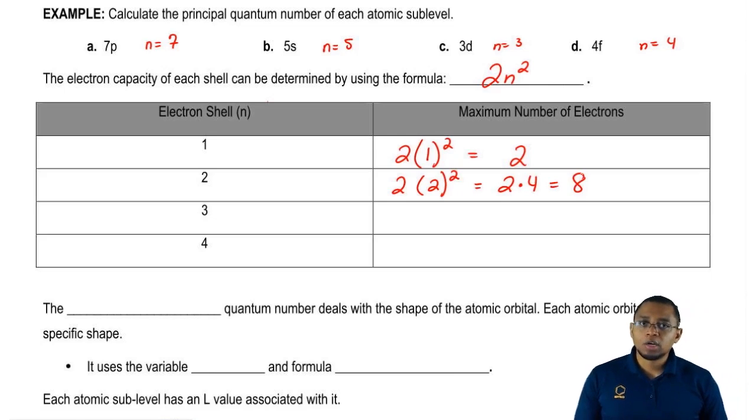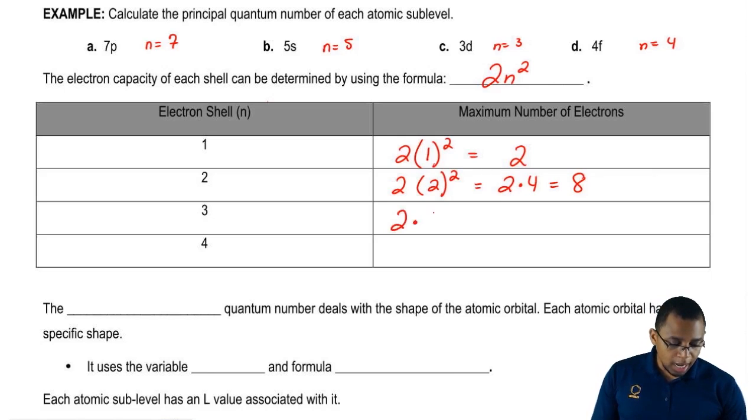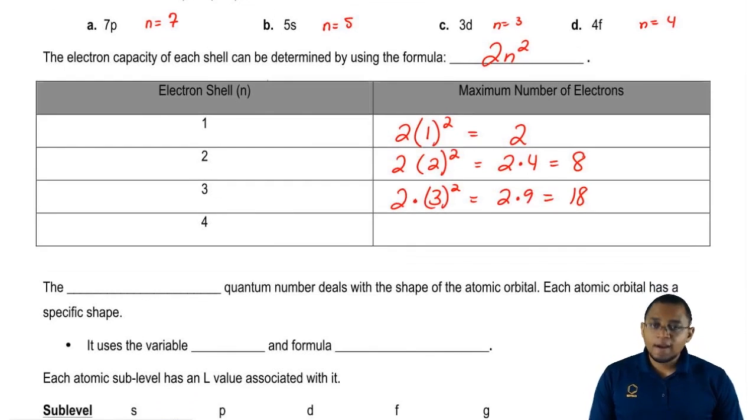So the second shell can hold a maximum of 8 electrons. For the third shell, it would be 2 times 3 squared, so it would be 2 times 9, so that would be 18. And then finally 4, it would be 2 times 4 squared, which is 2 times 16, which is 32.